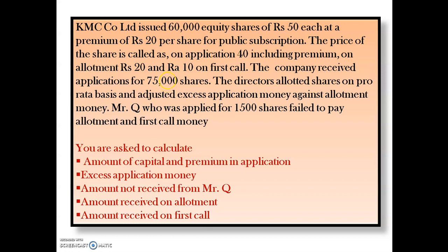The company received applications for 75,000 shares, so this is a case of over-subscription. The directors allotted shares on pro-rata basis, meaning the excess application money will be adjusted against the allotment money. One shareholder, Mr. Q, applied for 1,500 shares but failed to pay the allotment and first call money. The question does not state how many shares were allotted to Mr. Q.